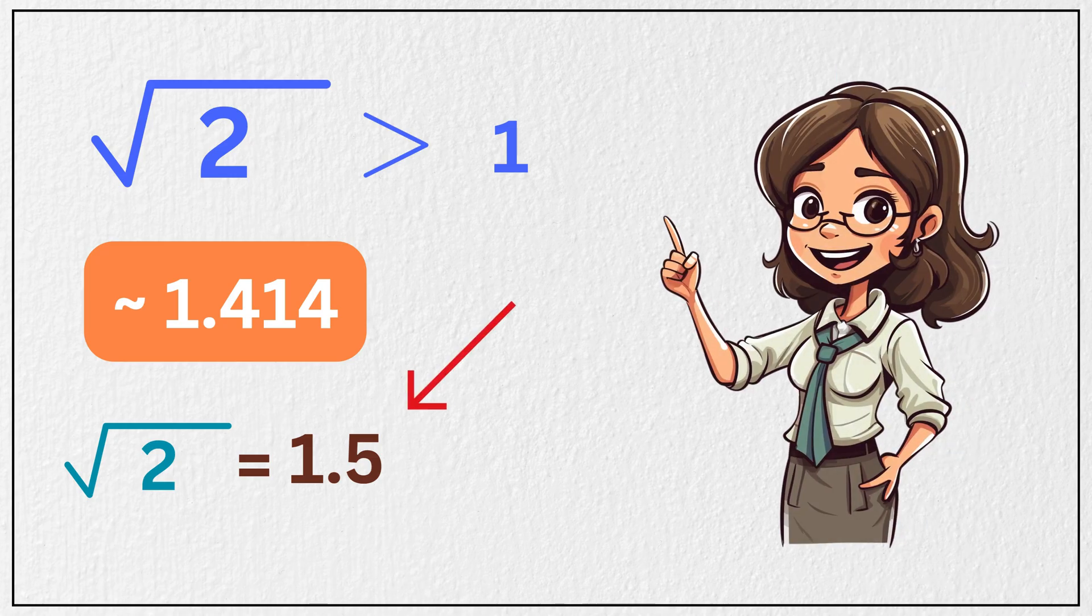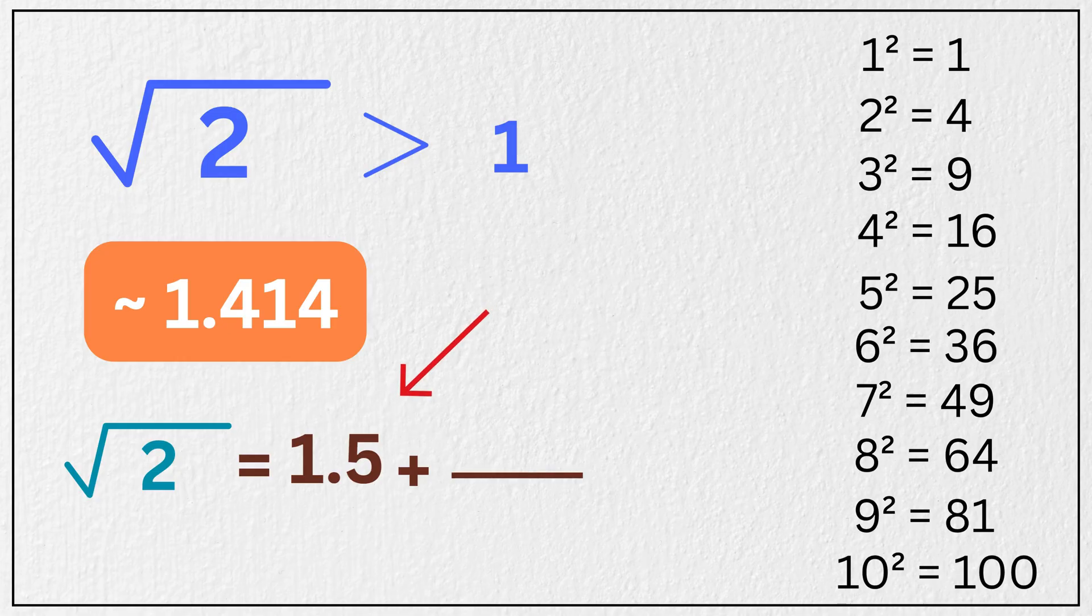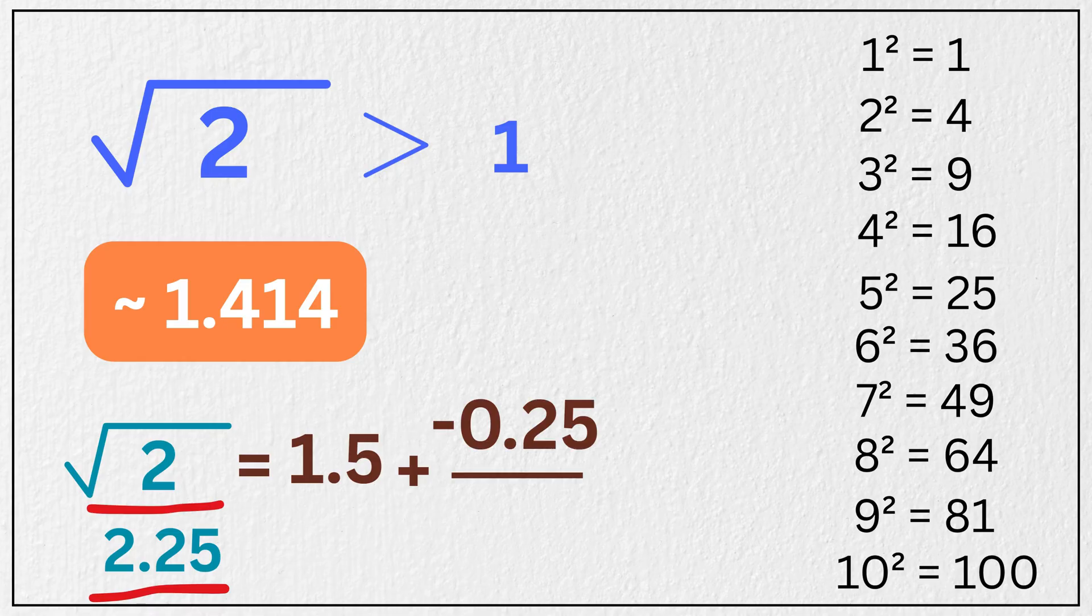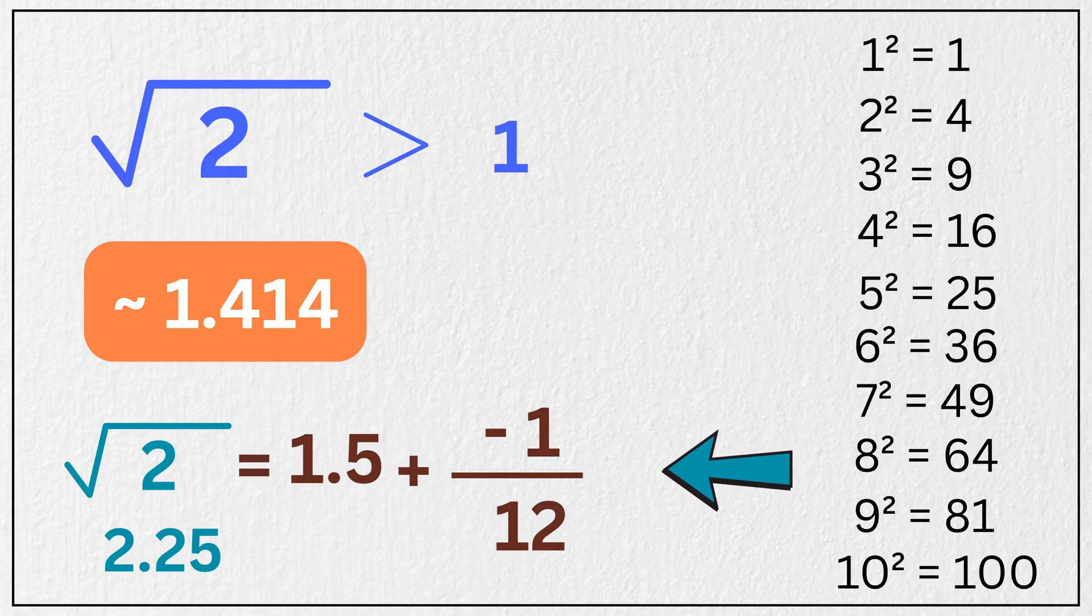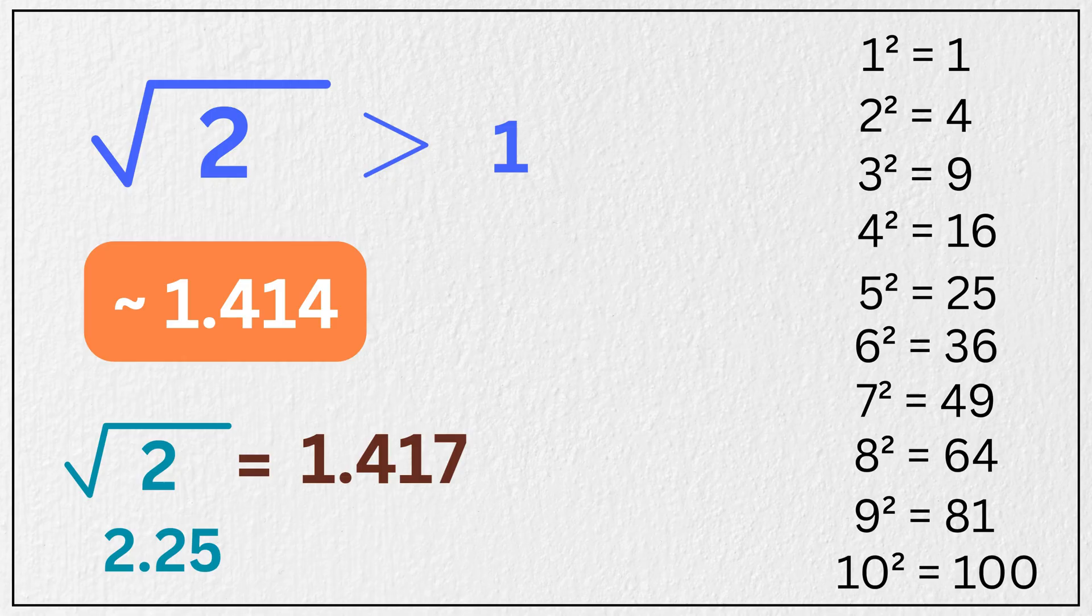Now to improve this, we need to repeat this process using our estimate. So take 1.5 here, square it to get 2.25. Write it here. Now 2 minus 2.25 equals negative 0.25. Multiply this 1.5 to get 3. Negative 0.25 over 3 is about negative 1 over 12. Subtract that from 1.5. We get 1.417. Boom. Much better, right?